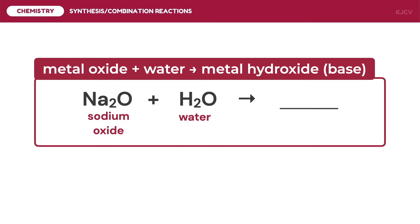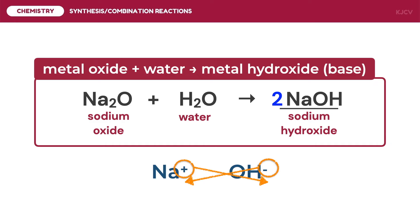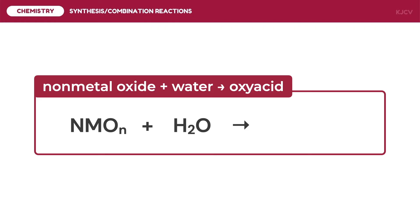The next reaction is sodium oxide reacting with water. The product is sodium hydroxide. Sodium has a positive 1 charge and hydroxide has a negative 1 charge; doing a crisscross of charges gives NaOH. The balanced reaction is 1 mole of sodium oxide reacting with 1 mole of water to produce 2 moles of sodium hydroxide.